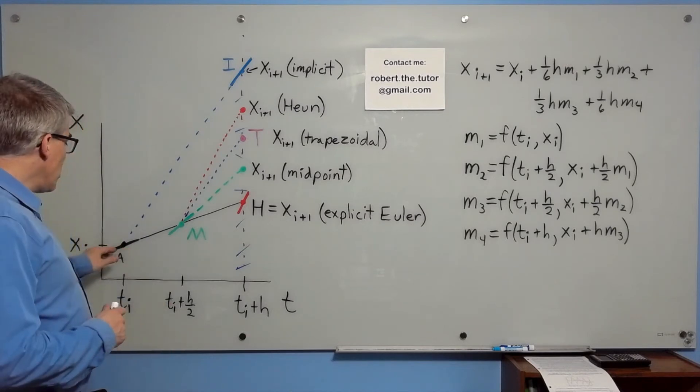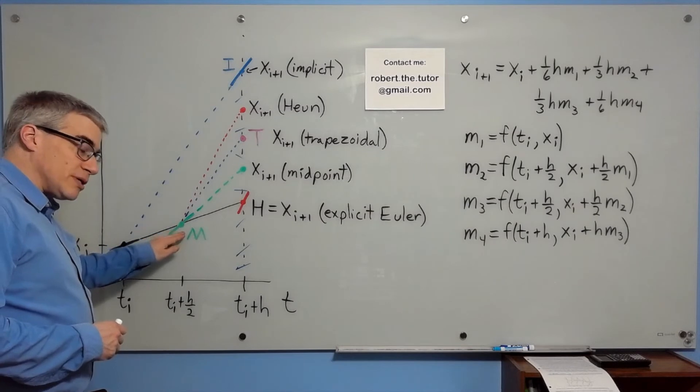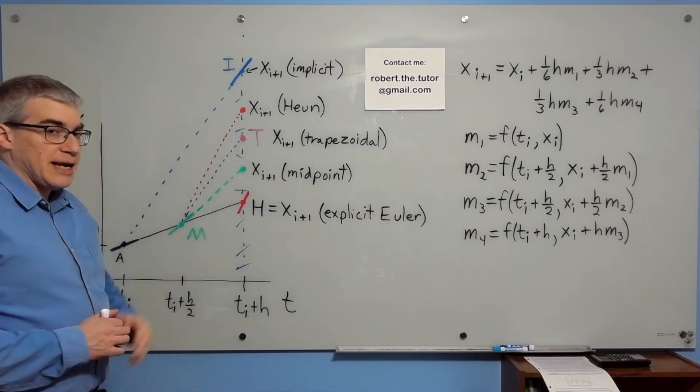The midpoint, we go halfway with the explicit. Then we find the slope at the midpoint and use that for the second half.